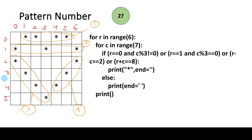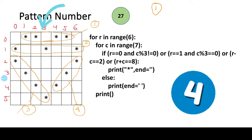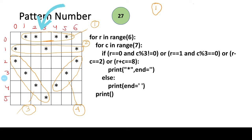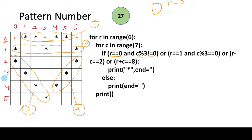First let's talk about portion number one. Here we have four stars in row number zero. The condition is: when row equals zero, we need stars wherever the column mod 3 is not equal to zero.